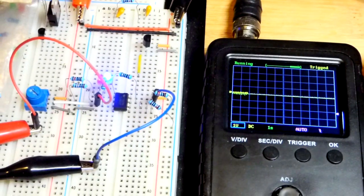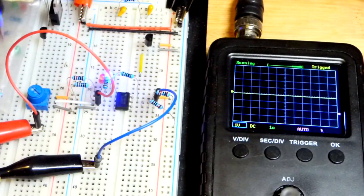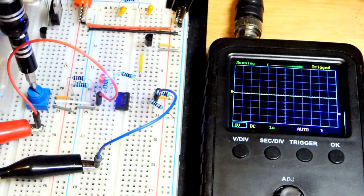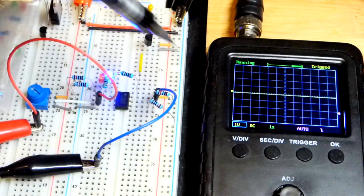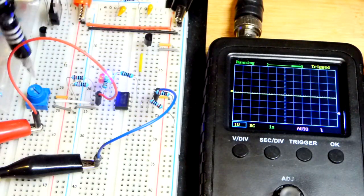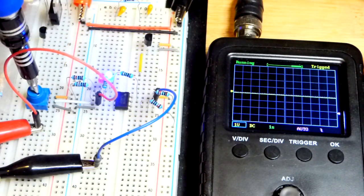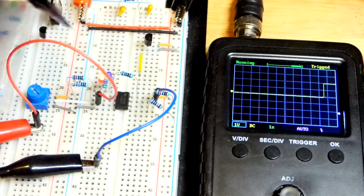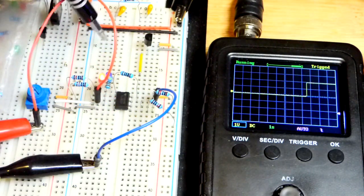Let's turn the trim pot. It's up more than halfway. Let's keep going up, and there you can see the red LED lit up.